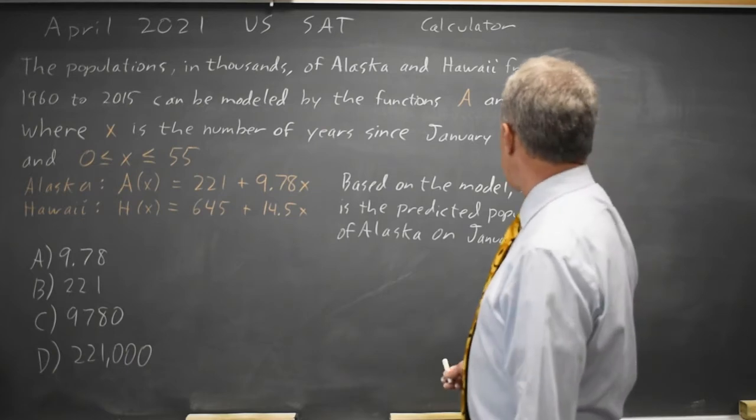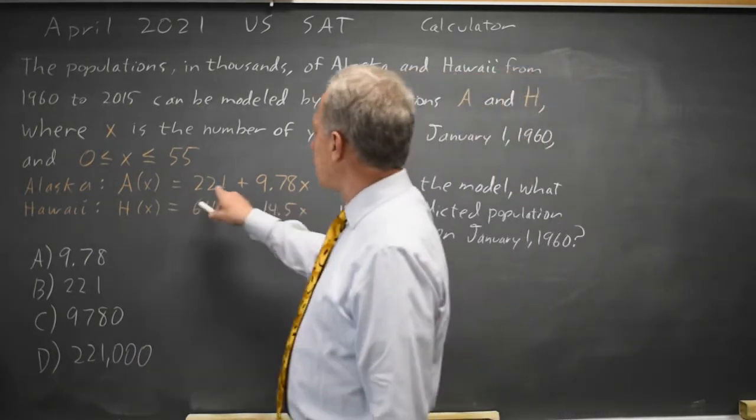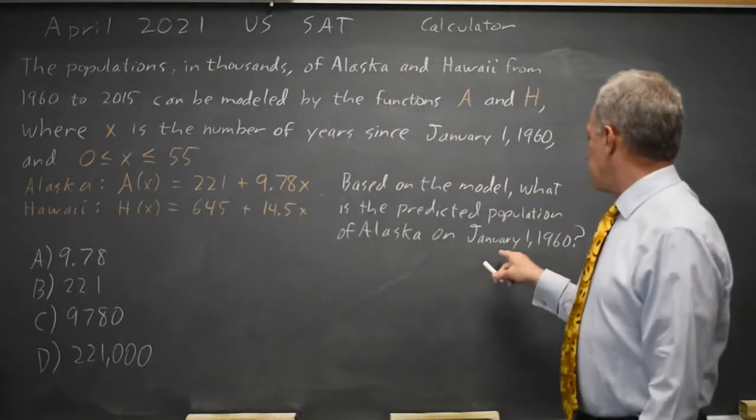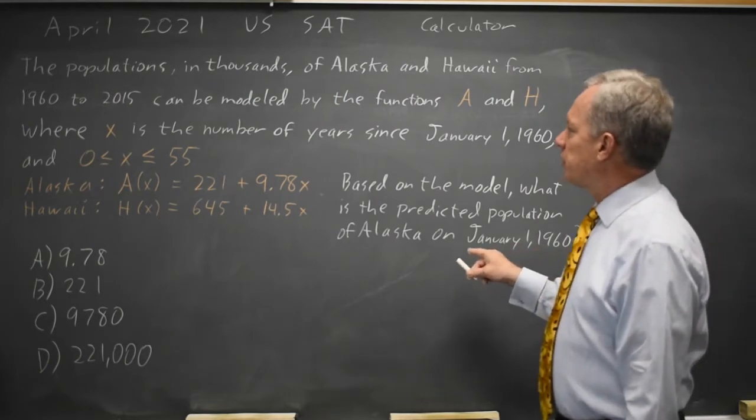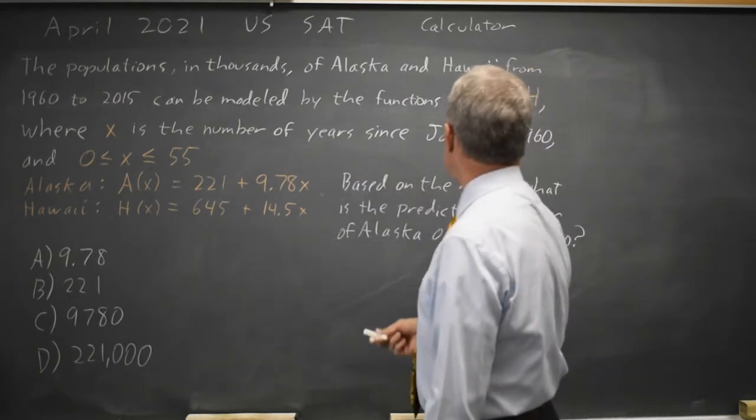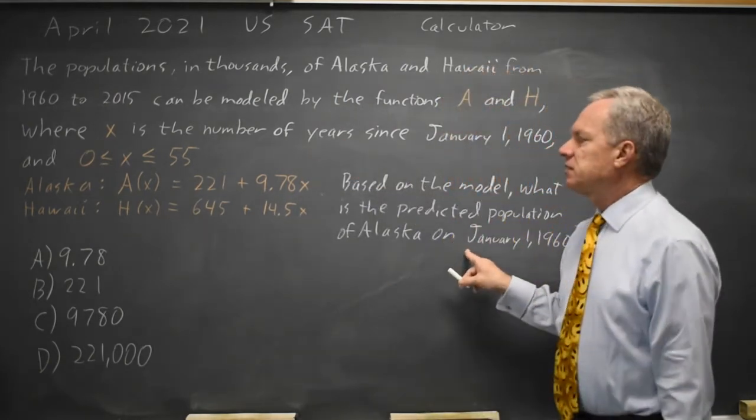They're asking for the predicted population of Alaska, so that's A of X, on January 1, 1960, where X is years since January 1, 1960. So on that date, X is 0.